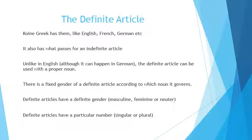Unlike in English — although it can and does happen in German — the definite article can be used with a proper noun. That would be the equivalent of 'I went to the shops and I saw the Mary.' We'd understand what was going on, but it wouldn't quite sound right. In German: 'Ich kann den Freddy sehen' — I can see the Freddy. So Freddy is accusative, so we make him 'den Freddy' in that example.